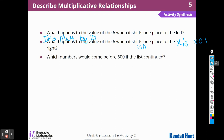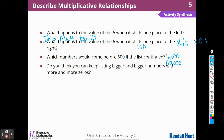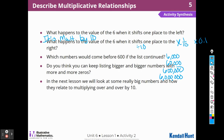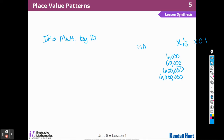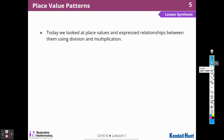Which numbers would come before 600 if the list continued? We already talked about that — 6,000, 60,000. If we continued up the list, we would keep adding those and moving it to the left. Can you keep listing bigger and bigger numbers? Absolutely, because I can add as many zeros as I want. I could do 600,000, then 6 million — just moving it to the left to make it bigger. But really, I'm multiplying it times 10.